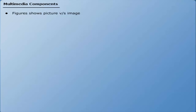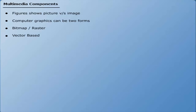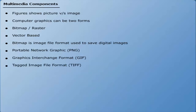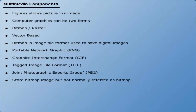Computer graphics can be of two forms: bitmap raster and vector based. Bitmap raster is basically an image file format used to save or store digital images. Many other image file formats like PNG (Portable Network Graphics), GIF (Graphics Interchange Format), TIF (Tagged Image File Format), and JPEG (Joint Photographic Experts Group) can also store bitmap images, but these are not normally referred to as bitmaps.